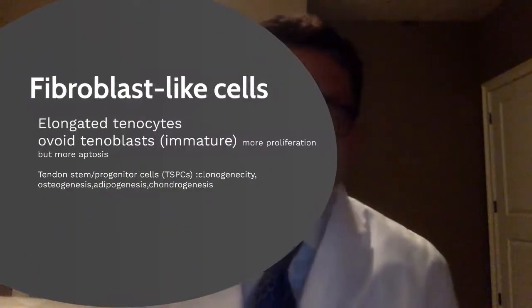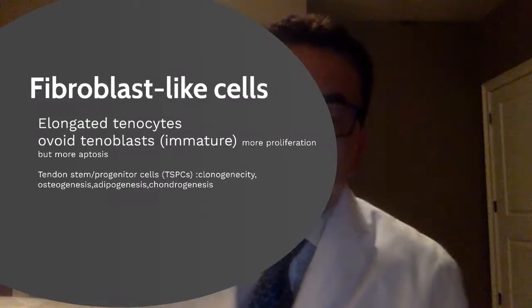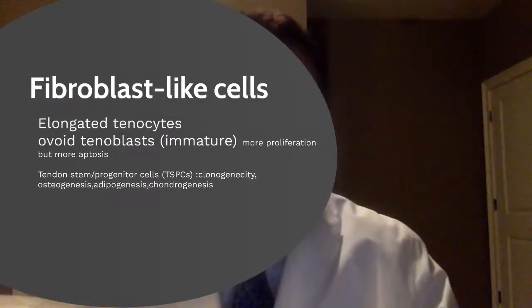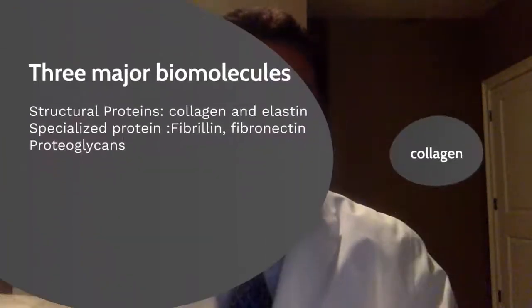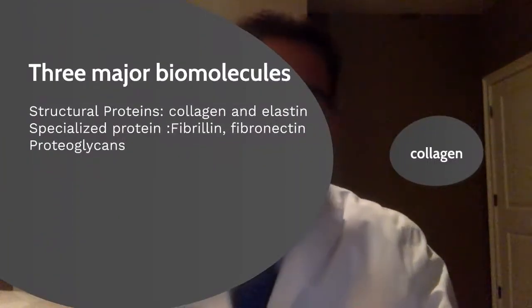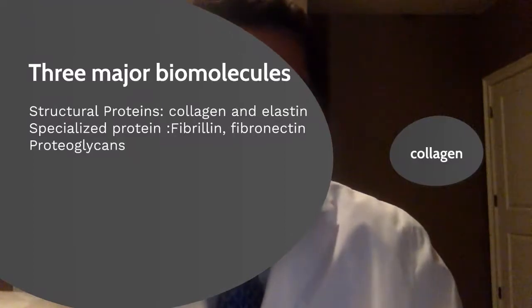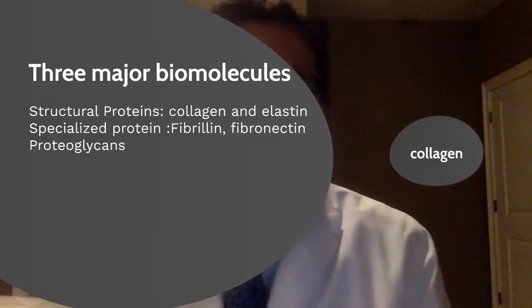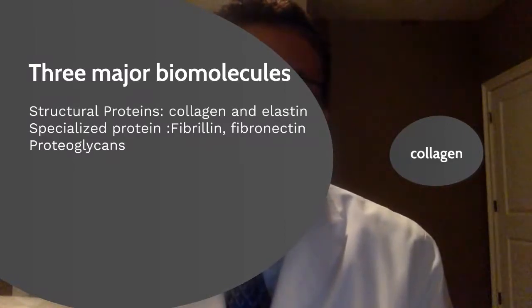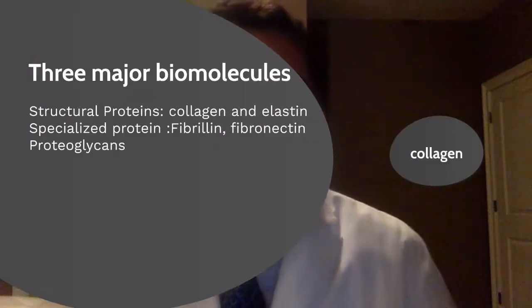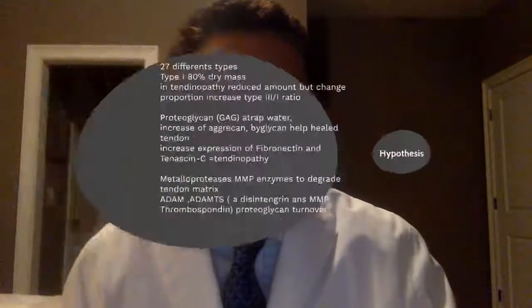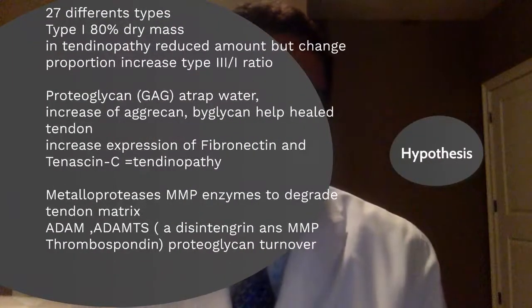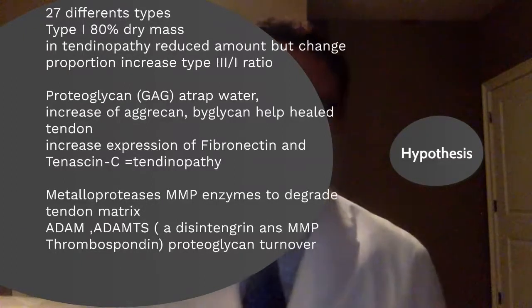Regarding the anatomy of the tendon, they have tenocytes — the mature and the immature ovoid form — because they still have the potential for formation of bone, cartilage, and fat tissue. The three major biomolecular components found in tendons are structural proteins like collagen and elastin, specialized proteins like fibrillin and fibronectin, and proteoglycans.